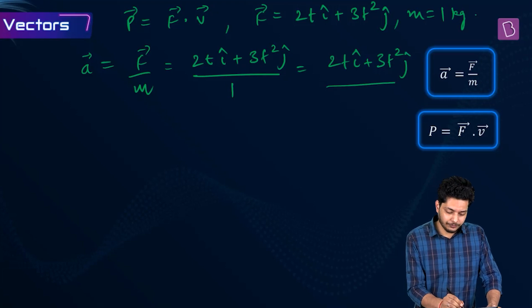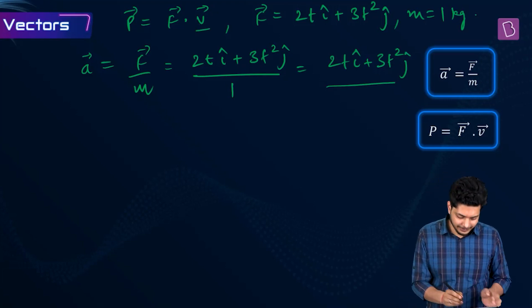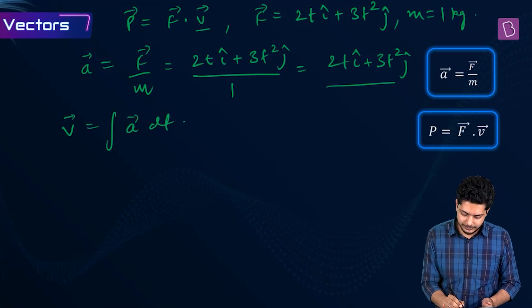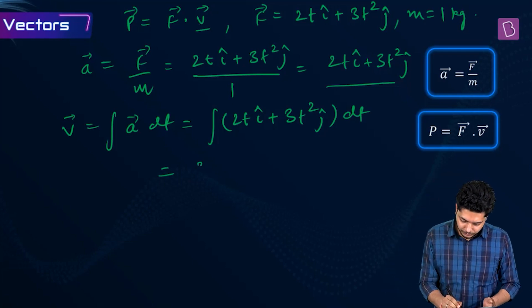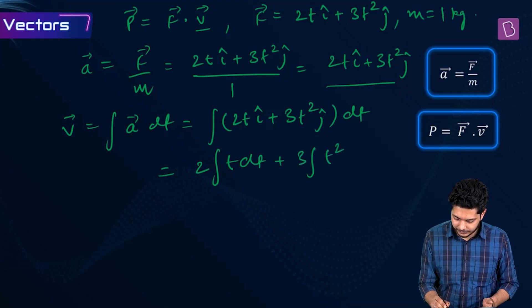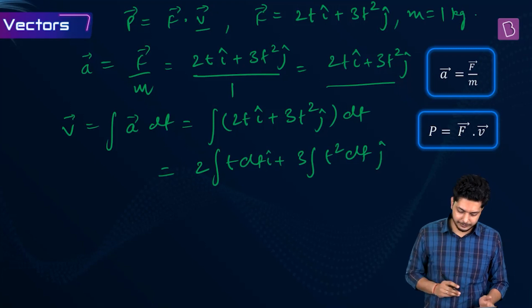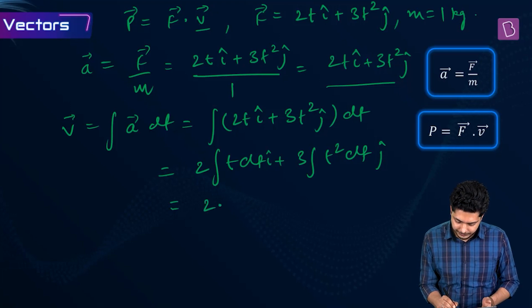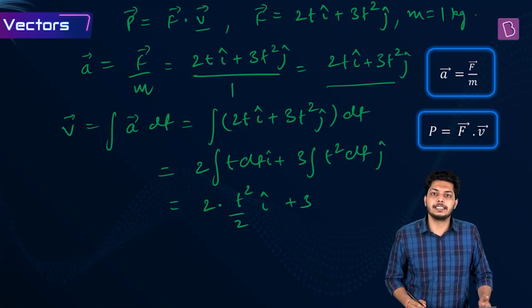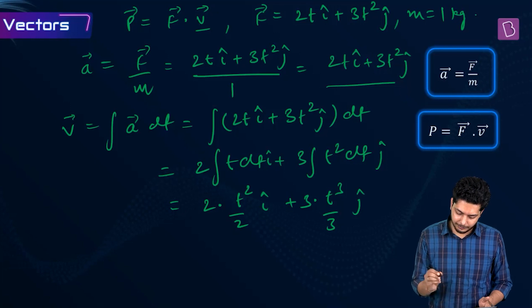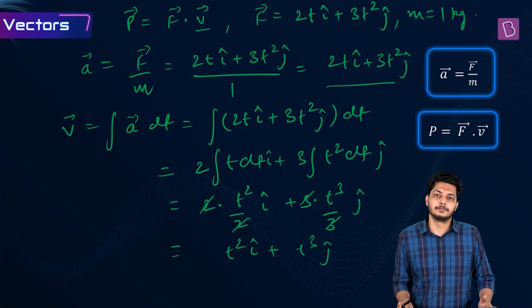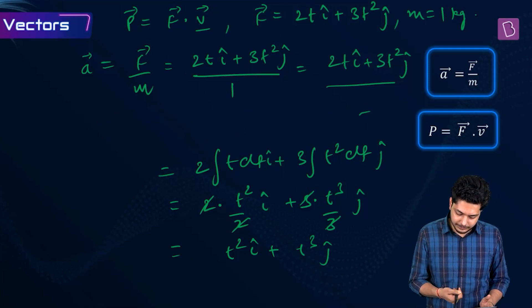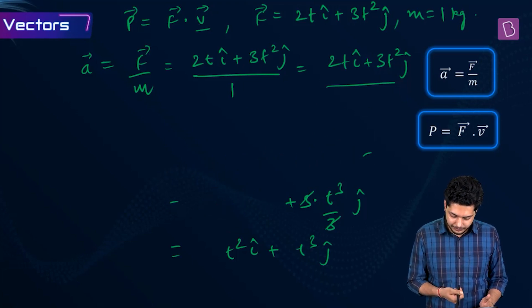We have acceleration; we need velocity by integrating. V equals integral of (2t î plus 3t² ĵ) dt. Integrating: 2t gives t²/2 times 2 for the î component, and 3t² gives t³/3 times 3 for the ĵ component. After cancellation, velocity V equals t² î plus t³ ĵ.